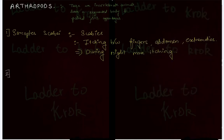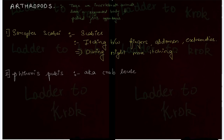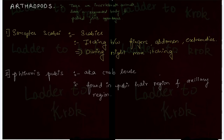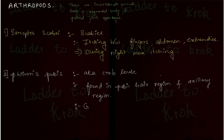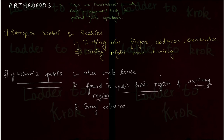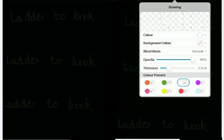The second arthropod you should know is Phthirus pubis. It is also known as crab louse. In the human body, it is found in the pubic hair region and axillary region. They are gray in color — though gray color alone doesn't confirm it is Phthirus pubis. If the question mentions pubic hair or axillary region, or mentions crab louse and asks for another name, the correct answer is Phthirus pubis.